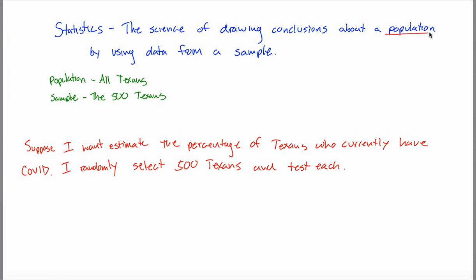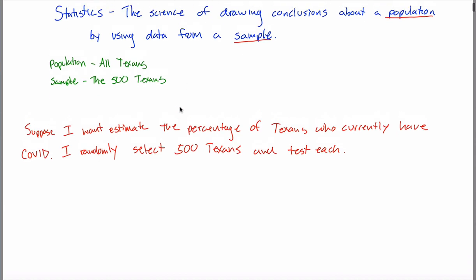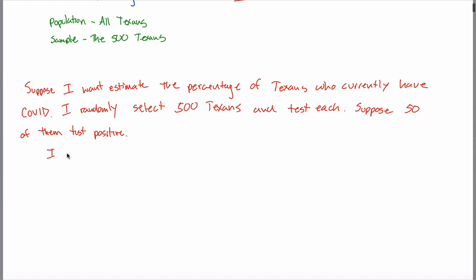You're answering a question about the population by only looking at the sample. So if the sample doesn't represent the population, it makes no sense to use your sample data to draw a conclusion about your population. It's pretty important that the sample is representative of the population. For now, I just want you to understand what the population is and what the sample is. In this example, I randomly select 500 Texans and test each. Suppose 50 of them test positive. That's 10% of the sample. But I'm not telling you 10% of Texans have COVID — I'm telling you 10% of our sample has COVID. So I therefore conclude...